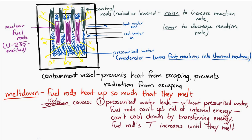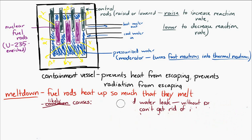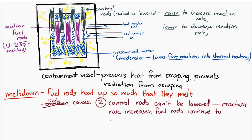Another way that it can happen is if the control rods cannot be lowered into the reactor. If you cannot lower the control rods, then the rate of fission reactions will increase and increase and increase and the fuel rods will continue to produce more and more energy until they get hot enough that they melt.